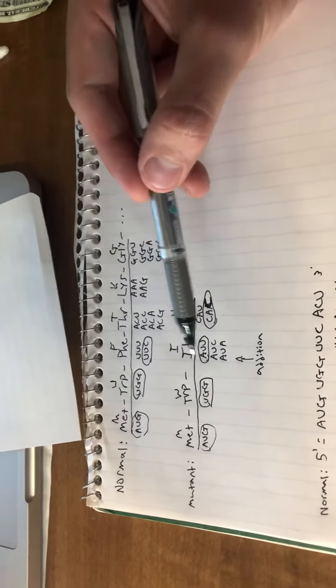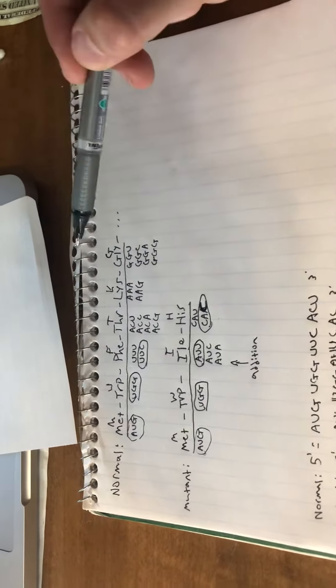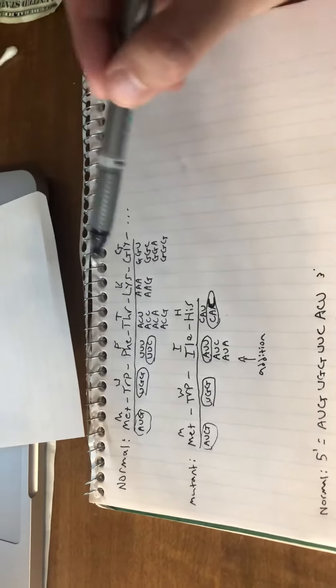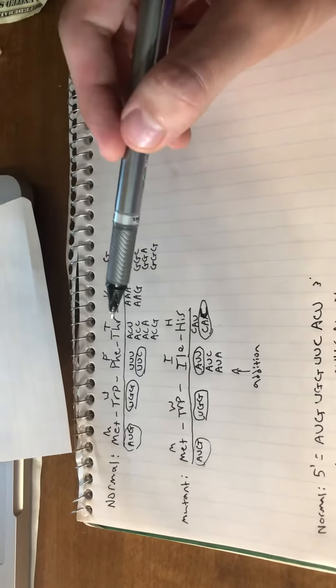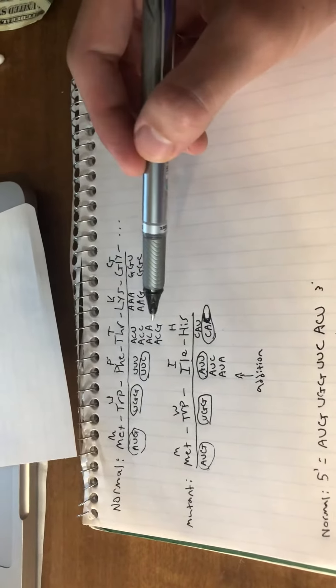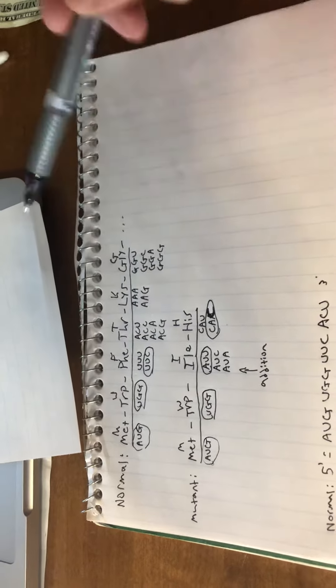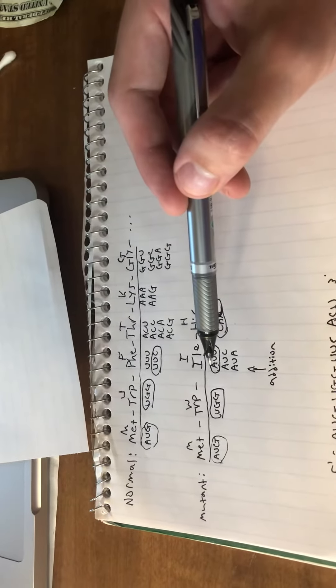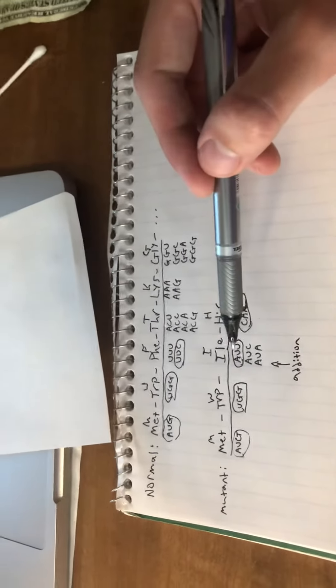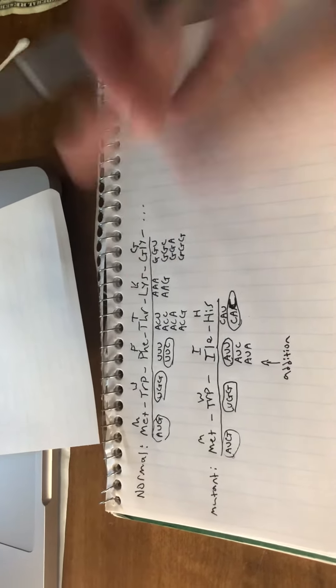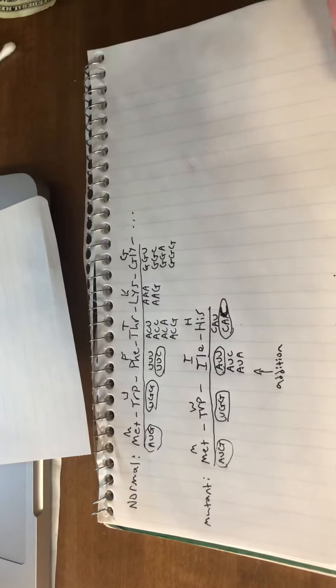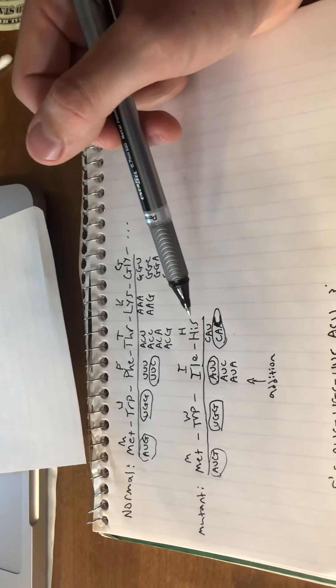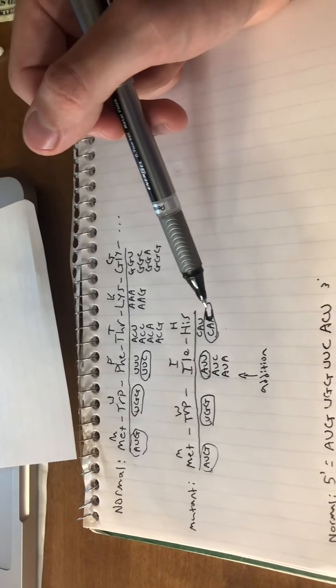What that means is the entire rest of the sequence is still going to read correctly, but it's not in the same frame as it was before. Because that one base pair was added, the whole coding sequence is shifted and that changes the outcome of the amino acids from the coding sequence.